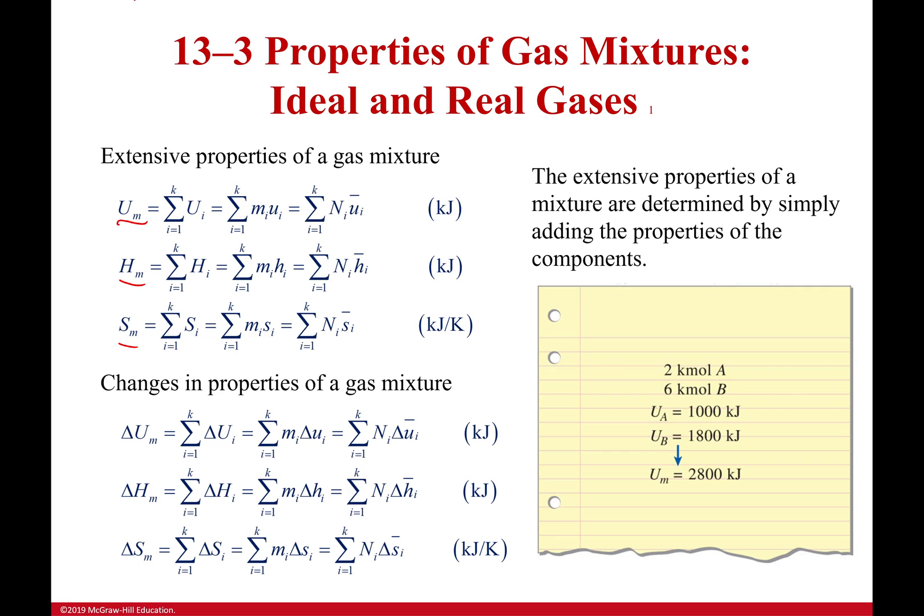Now if one component is really really tiny maybe you can just ignore it and still get a really good answer. Like for example seawater is 0.975% fresh water.